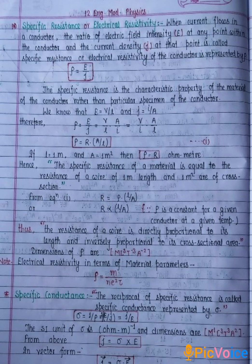Now, specific conductance. The reciprocal of specific resistance is called specific conductance. Specific conductance is represented by sigma. Sigma is equal to 1 by rho, or by putting the value of rho, it can be expressed as J by E.